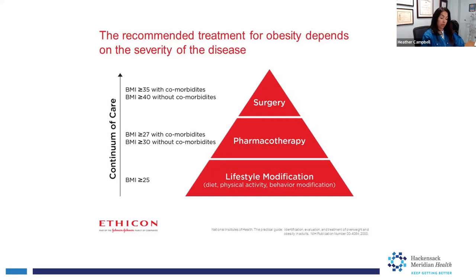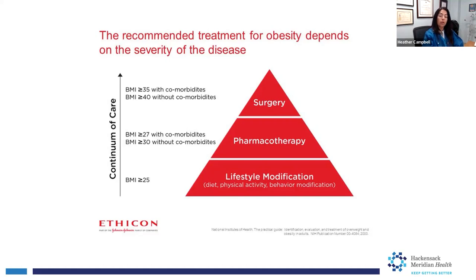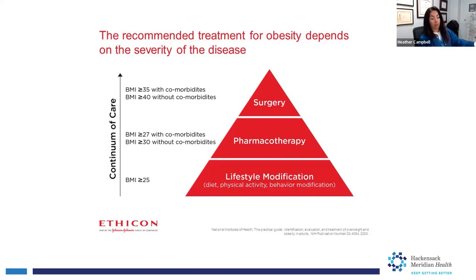But you have to have associated comorbidities, specifically high blood pressure, diabetes, or high cholesterol. If the BMI is over 30, you qualify for medicines without needing to have any comorbidities. This is more common for younger patients who are overweight and haven't had obesity long enough to develop high blood pressure or diabetes.